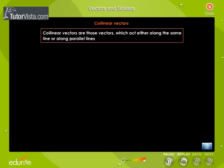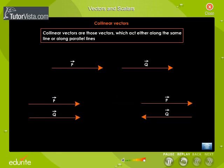Collinear vectors are those vectors which act either along the same line or along parallel lines. These vectors may act either in the same direction or in the opposite direction.